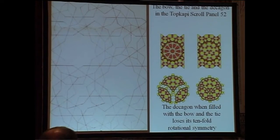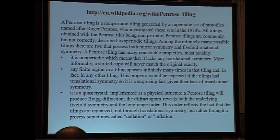So, here are a few examples. This is a famous panel that was found by the historians. It's called the Topkapi Scroll Panel. And it tells you how to obtain these decagonal and pentagonal symmetries. And in these decagonal symmetries, you see, we have, the decagon can be filled with the bow and the tie, and then you can lose its terms of symmetry.